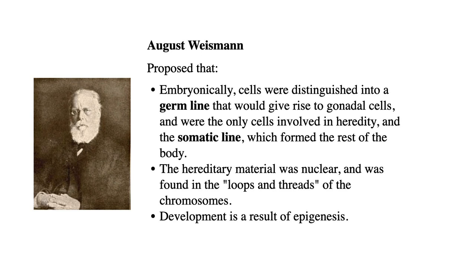August Weismann studied things at the cellular level, asking about mechanisms behind inheritance and heredity. What he proposed is this particular model: there is a germline — meaning the cells that can contribute to the next generation, the reproductive cells found in your gonads, like oocytes and sperm. And then there's also the somatic line — everything else, everything that's going through mitosis.